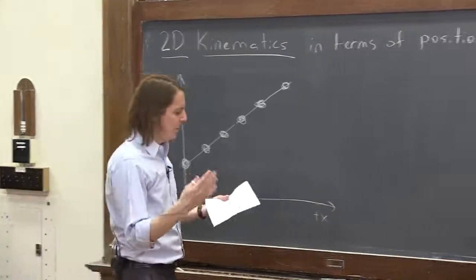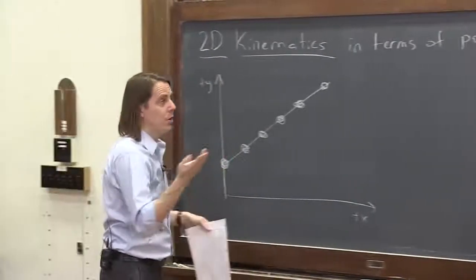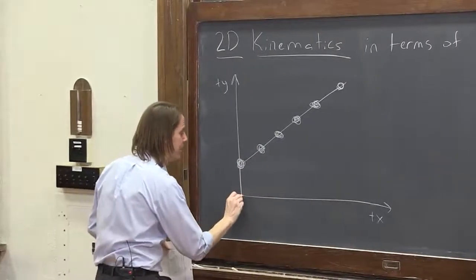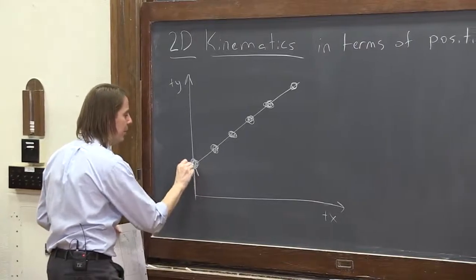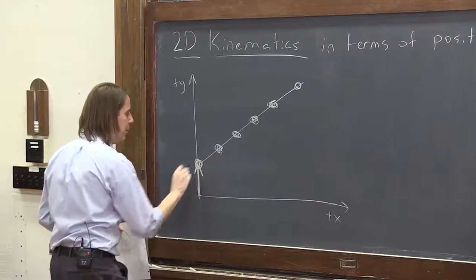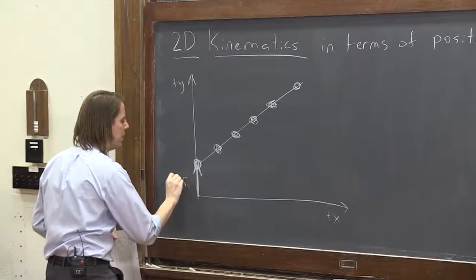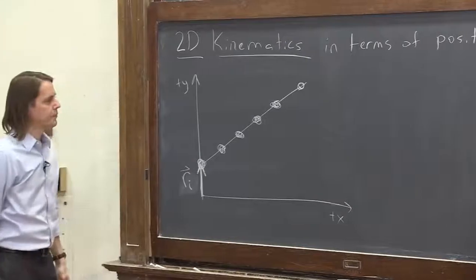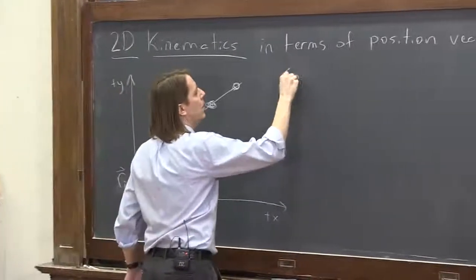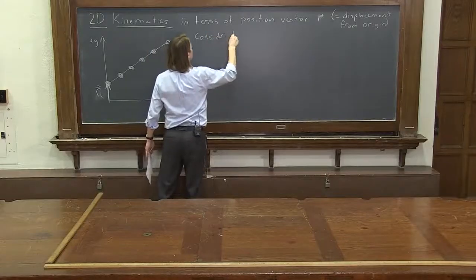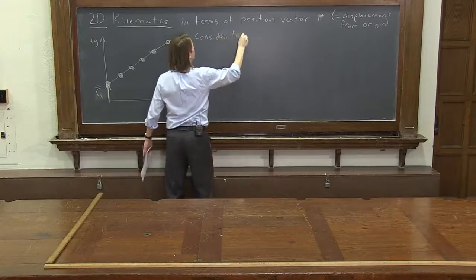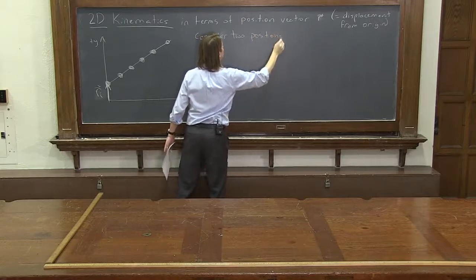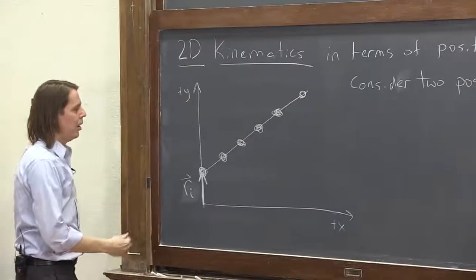So let's look at what we really mean by that. Let's draw a couple of r's. It's simply the vector from the origin to a position. There is r initial. Let's consider two positions, where it started and where it ended: r initial, r final.